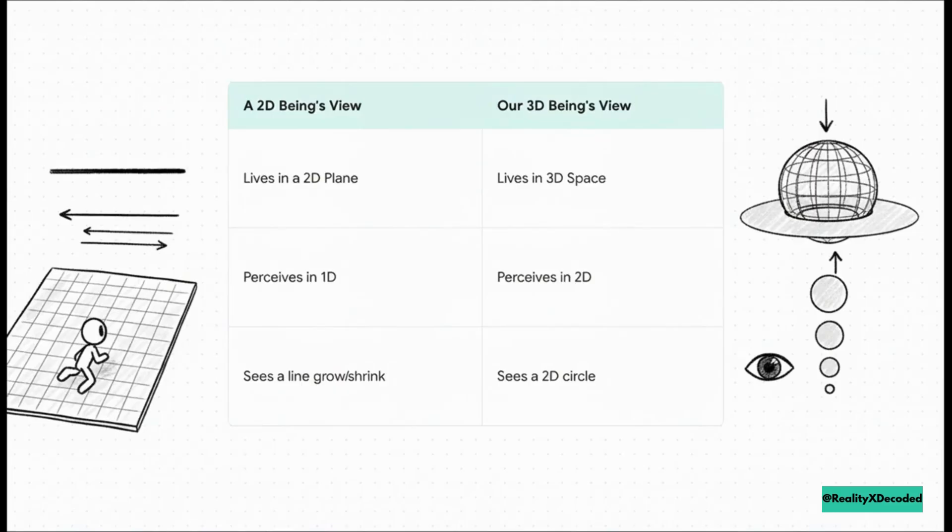Now, let's take that same logic and apply it down a level. Let's do a little thought experiment. Imagine a 2D creature, let's call him flat man, living on that flat piece of paper. Since he lives in 2D, he would perceive the world in 1D as just a single line. So, if you passed a 3D sphere through his 2D world, he wouldn't see a sphere. No way.